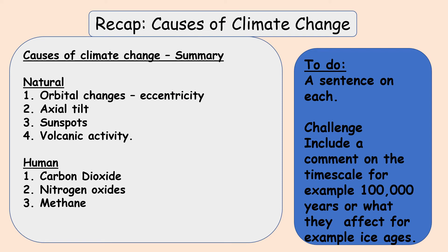So a recap — those are the seven causes of climate change that I'd like you to write a sentence about for each, summarising what effect they have on our planet, what they are caused by, and how they affect our climate. Remember the challenge if you want to extend yourself. Write these down and then send them to your teacher.